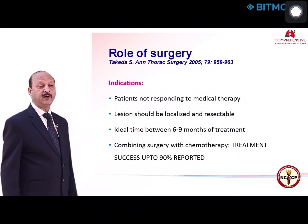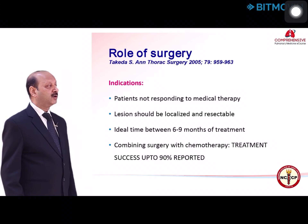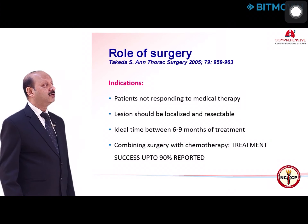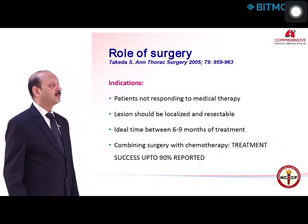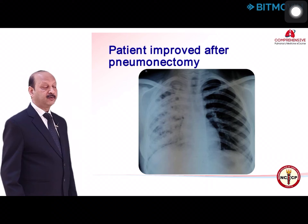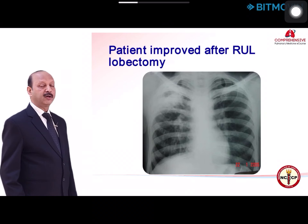Regarding the role of surgery, one should always consider whether an MDR or XDR tuberculosis case can be considered for surgery. Common indications include patients not responding to medical treatment provided the lesion is resectable, localized, and the patient is fit for surgery. The ideal time is between 6 to 9 months of treatment, though it may vary. Combining surgery with chemotherapy has shown evidence of achieving treatment success in almost 90% of cases. Examples include pneumonectomy for right destroyed lung with MDR-TB and for thick-wall cavity in the right upper lobe, both with good patient responses.